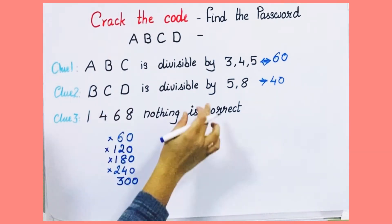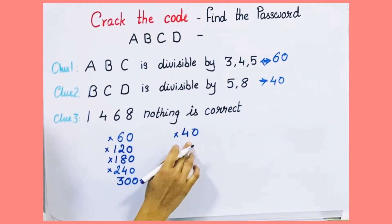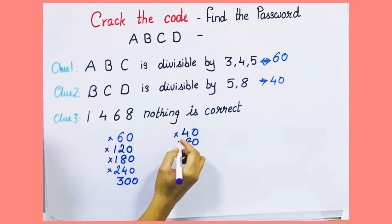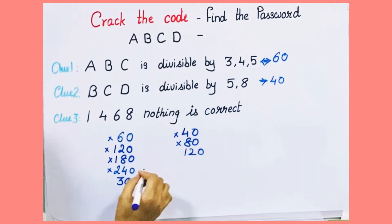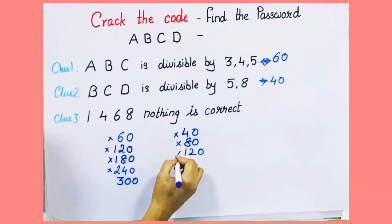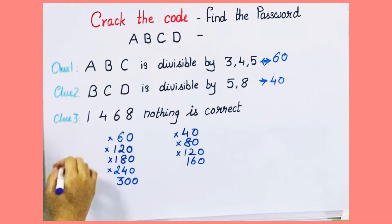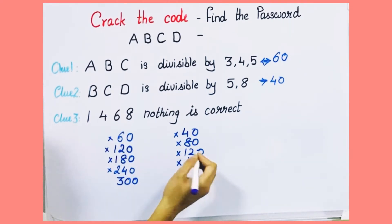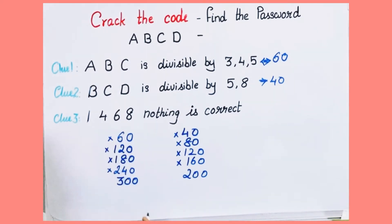Now let's check BCD. BCD must be a multiple of 40. The multiples of 40 are: 80 — 8 is there, so we can't take it. Next is 120 — 1 is there, can't take. Next is 160 — 1 and 6 are there, can't take. Next multiple of 40 is 200 — yes, these digits are not there.